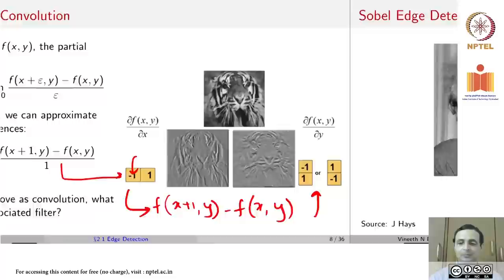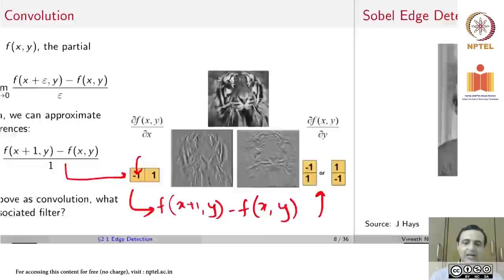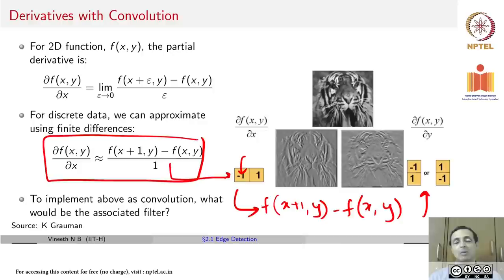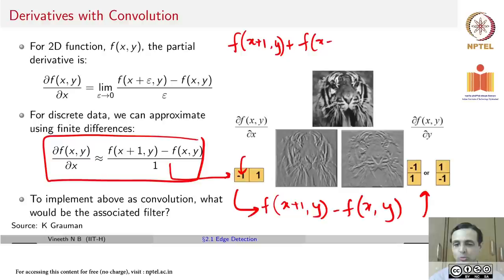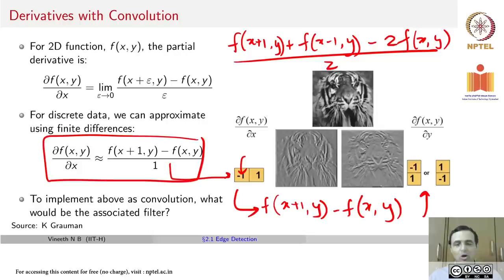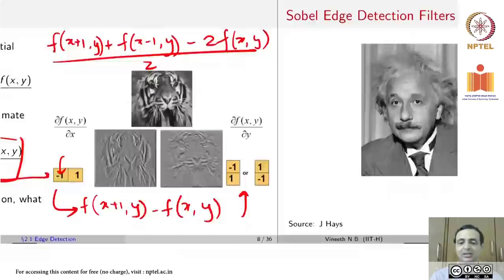There are other ways of defining the gradient. Remember, for discrete data we obtain the gradient using a particular formula that is one kind of approximation. There could be several other ways — for example, the gradient can also be written as f(x+1,y) plus f(x-1,y) minus 2f(x,y) divided by 2. That is also a valid approximation of the gradient. There are multiple ways of defining the gradient depending on how far you want to go in your neighborhood around the point.